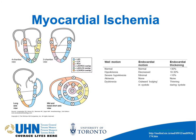Another cause of cardiac dysfunction would be myocardial ischemia. There are 17 segments of the heart, and for each segment you want to look at endocardial motion and thickening. You will need to be familiar with these numbers for the examination.